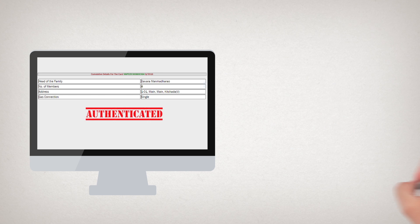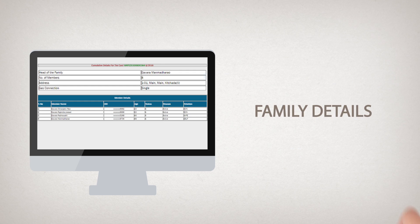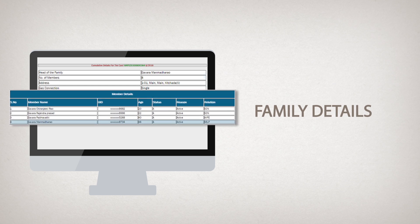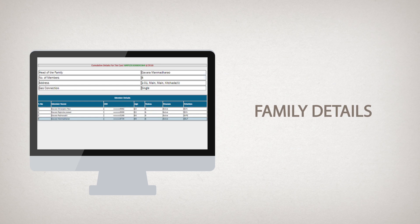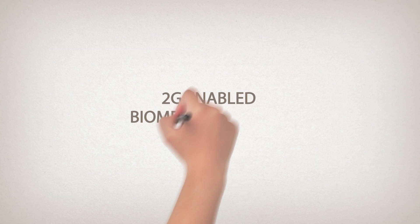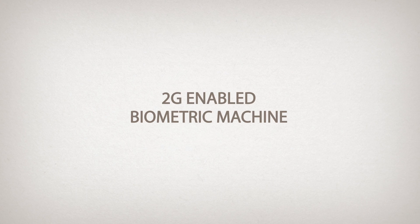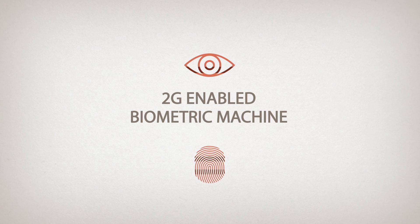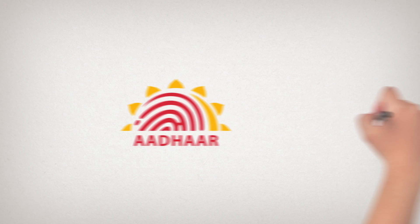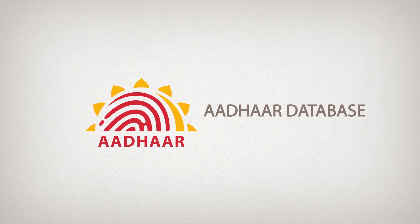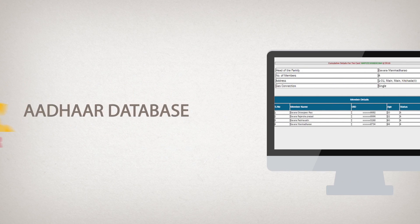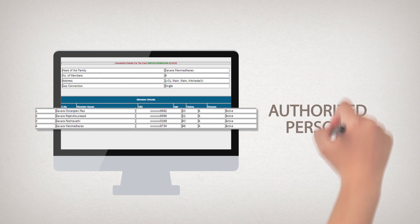Upon authentication, the beneficiary's family details show up on the screen with their allocation. Upon selecting the family member, the beneficiary uses a 2G-enabled biometric machine to enter his thumb impression or iris scan. This data is authenticated via aadhaar database, thereby ensuring only the authorized person avails the benefit.